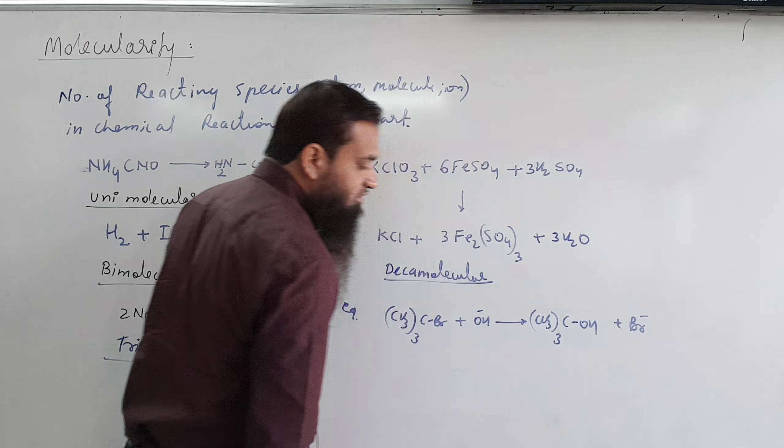But actually, what is the order of this reaction? It is a first order reaction. The order is first because the rate depends only on the concentration of tertiary butyl bromide — rate is directly proportional to the concentration of tertiary butyl bromide, not on OH⁻ — because this is a two-step reaction.